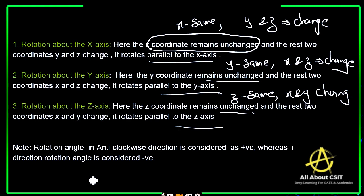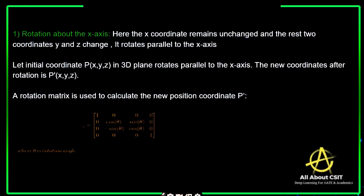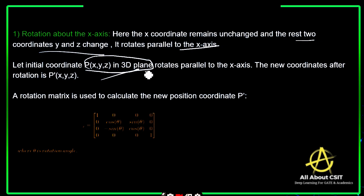One important point to remember: if the rotation angle is in an anti-clockwise direction, we consider it as positive. Anti-clockwise means positive, and clockwise means negative. Now let's discuss rotation about the X-axis — how the object rotates about the X-axis and what matrix we need to consider. The X coordinate remains unchanged and the rest two change. It rotates parallel to the X-axis. The initial coordinates of an object in the 3D plane are X, Y, Z.